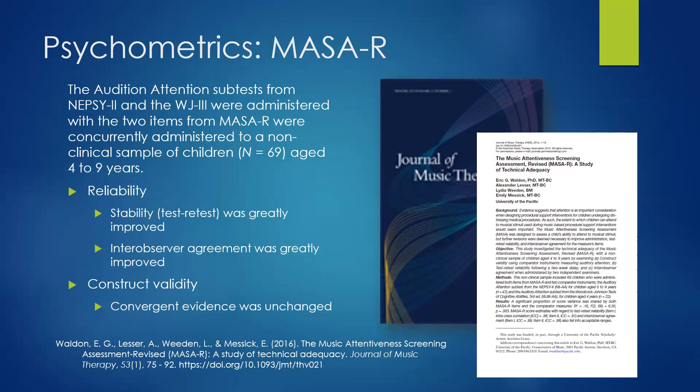For item two, children originally held up Aladdin or Jasmine puppets when each vocalist sang. But the behavior wasn't discrete enough for consistent inter-observer scoring. The response was revised to simply pointing at a picture of Aladdin or Jasmine, which was a more discrete response and much easier to record, greatly improving the psychometrics.